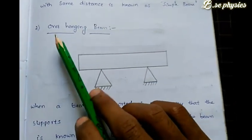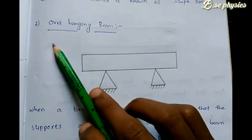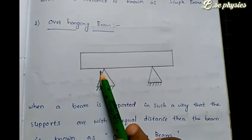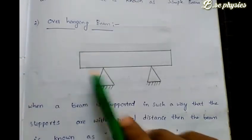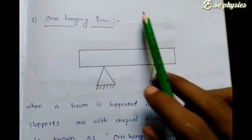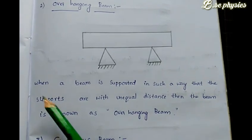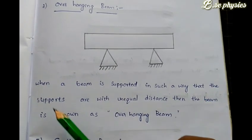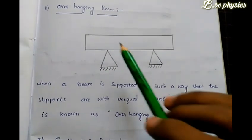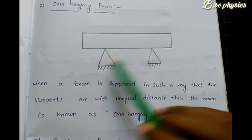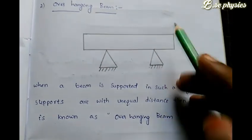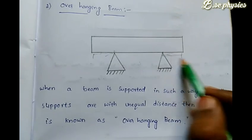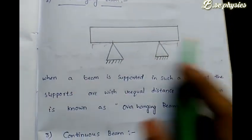The second one is the overhanging beam. Here we have unequal supports — the supports are at unequal distances from the ends of the beam. The definition: a beam is supported in such a way that the supports are at unequal distances, and that is called an overhanging beam.